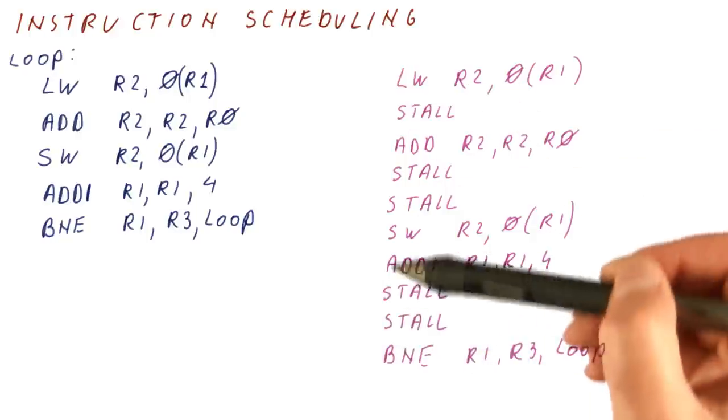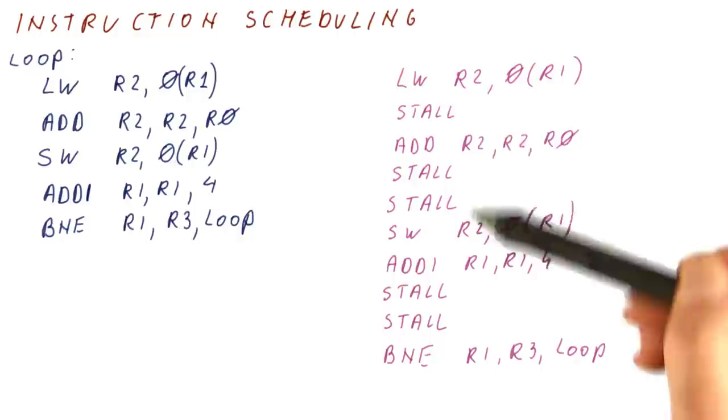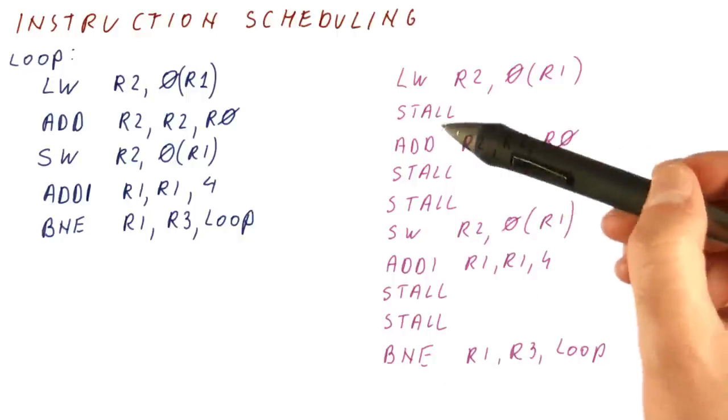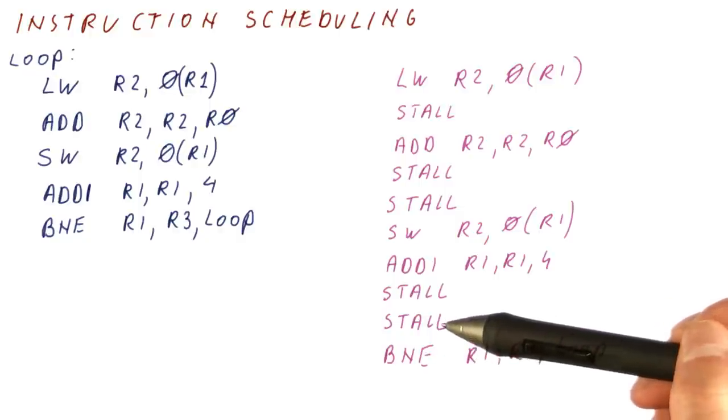So let's say that the compiler is trying to help the processor do better than this. If we still have the same processor, but we wanted to execute these instructions faster than 10 cycles per iteration. How can we do that?